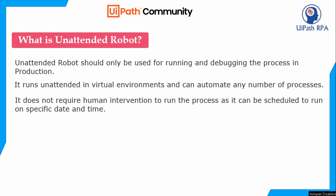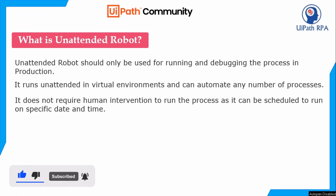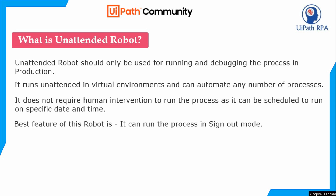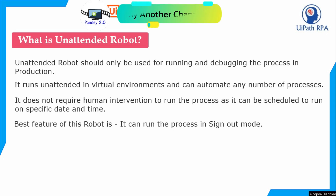With the unattended robot, you can directly run your job from Orchestrator and schedule it — there's no human intervention. You just schedule it and automatically your process will be executed on the specific date and time. The best feature of this robot is it can run the process in sign-out mode as well, meaning you just keep your system in sign-out mode.